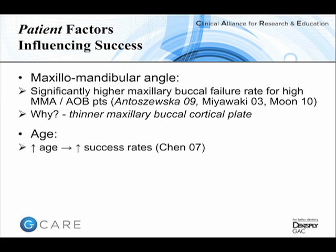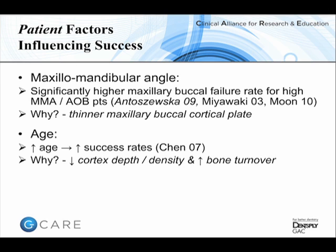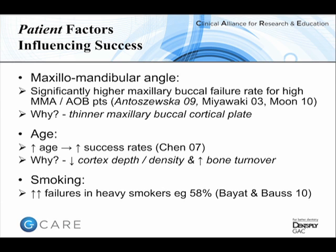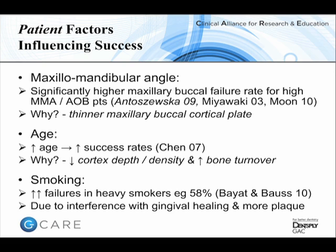Age is relevant: generally the older the patient the higher the success rate, particularly in the transition from teenage growing patient to adult. Teenagers still growing have a high bone turnover rate and a thinner, less dense cortex than adults. Smoking is a relative contraindication, as heavy smokers have a massively increased failure rate — in one German study the failure rate was 58% in heavy smokers compared to approximately 15% in non-smokers — likely due to interference with gingival healing and increased plaque retention.